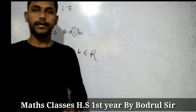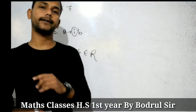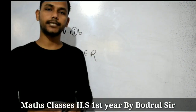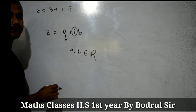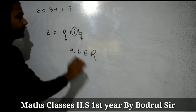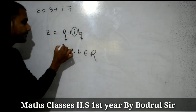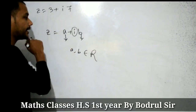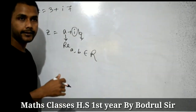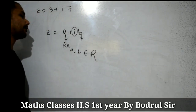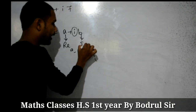In a complex number there are two parts: one is the real part and the other is the imaginary part. Here, a is the real part and b is the imaginary part. Symbolically, you can represent the real part by Re and the imaginary part by Im.